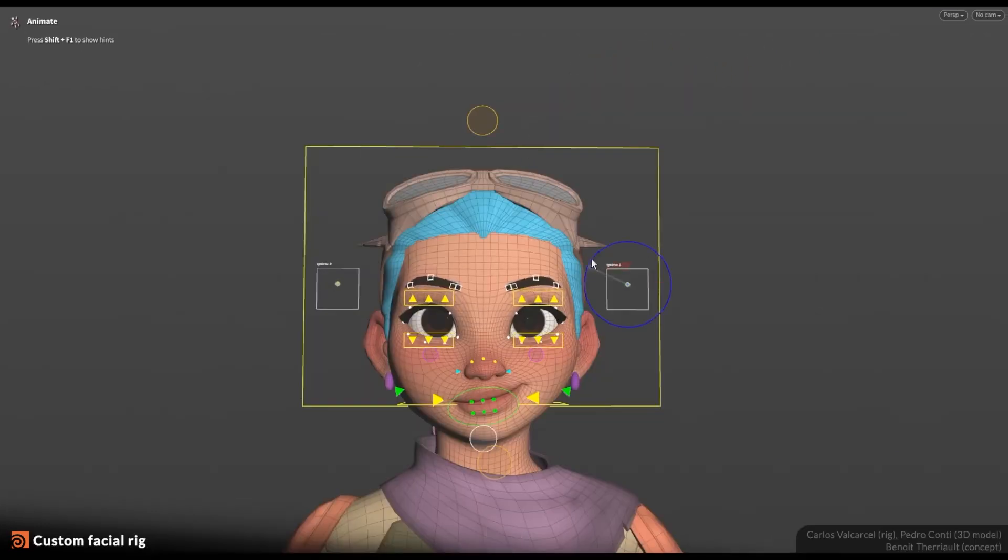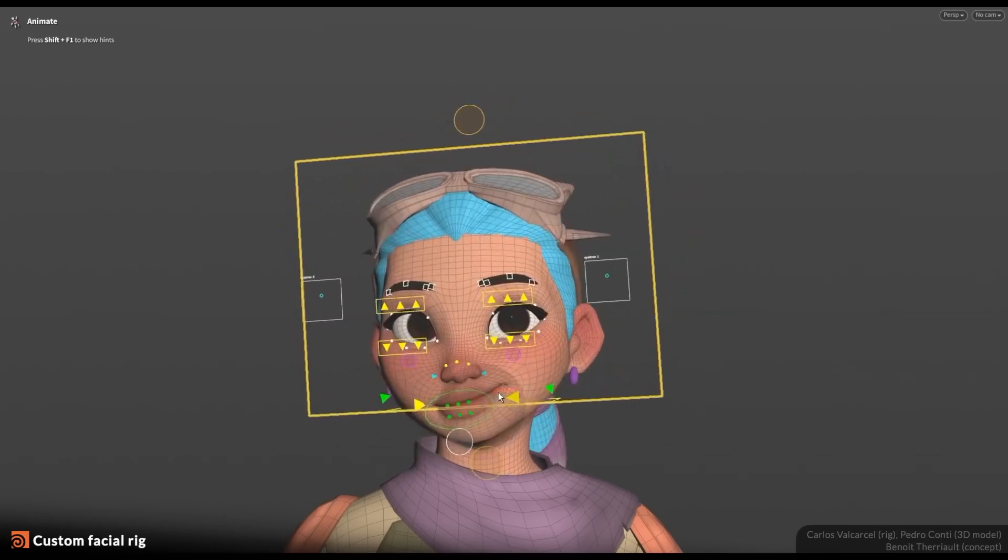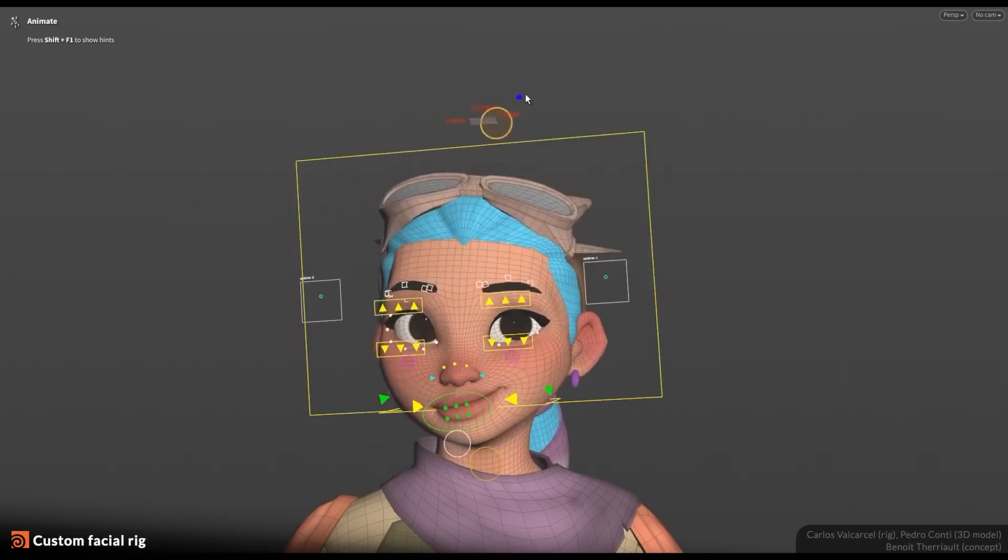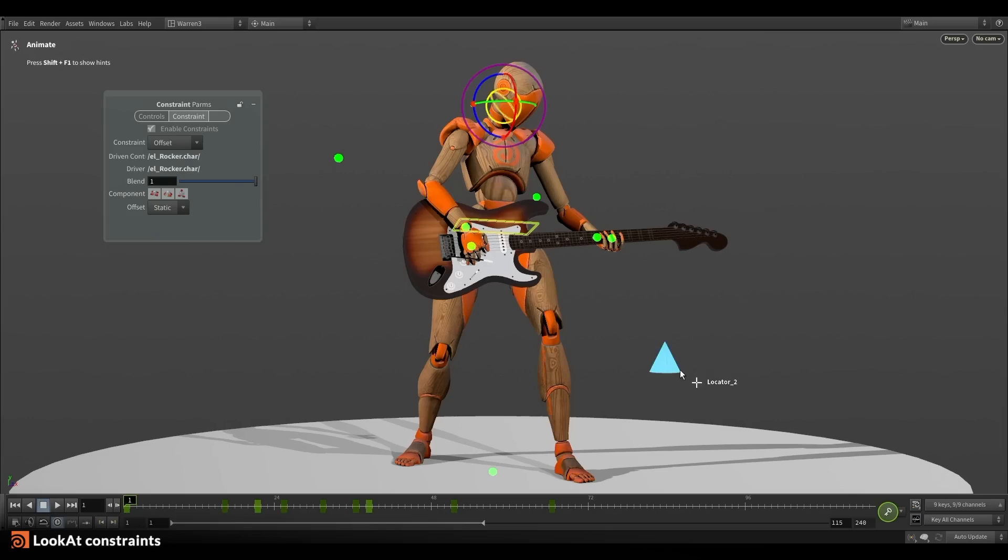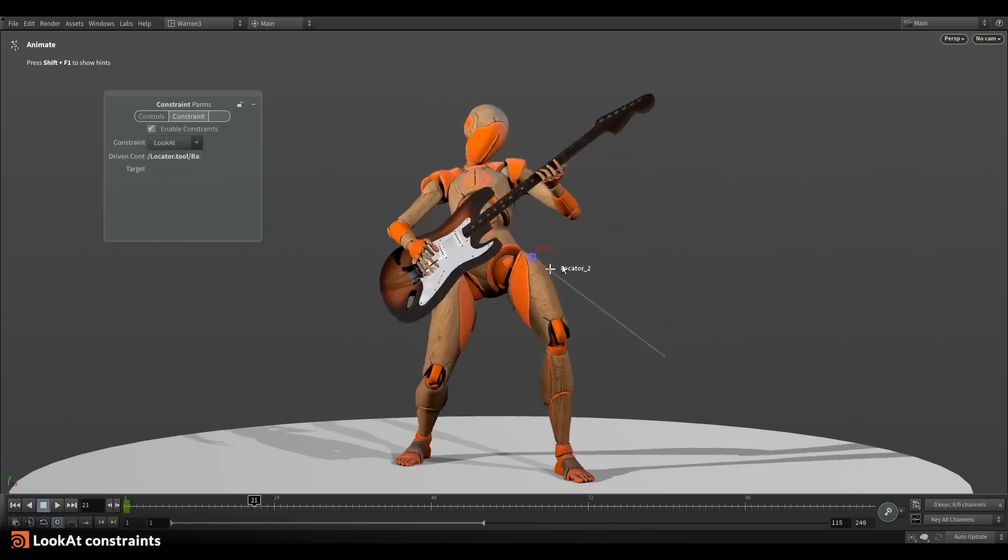It introduces new Cinefax auto-rigging modules for various body parts, such as limbs, hands, feet, necks, etc., along with updated spine rig that supports squash and stretch and improved biped rig components.